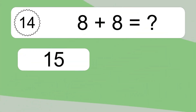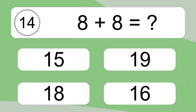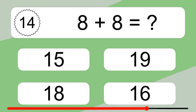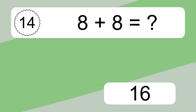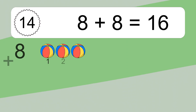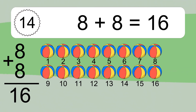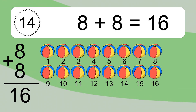8 plus 8 equals what? 8 plus 8 equals 16. Let's count it. 1, 2, 3, 4, 5, 6, 7, 8, 9, 10, 11, 12, 13, 14, 15, 16.